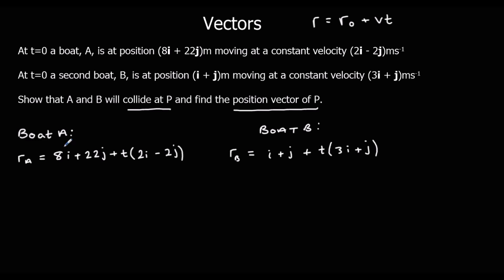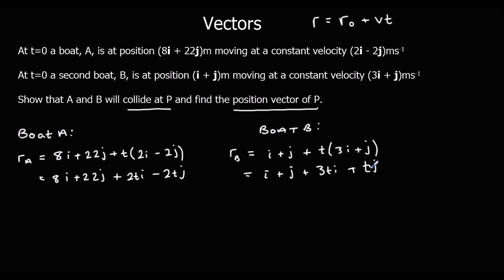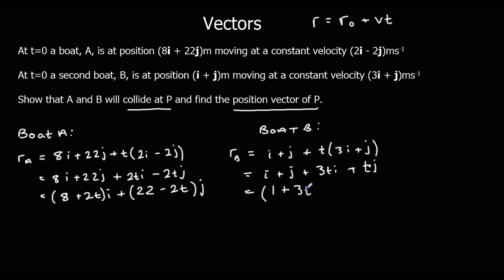We've got the position of A and the position of B. We're going to separate out the i's and j's by expanding the brackets — multiplying by t. For boat A: the i-component is 8 plus 2t, and the j-component is 22 minus 2t. For boat B: the i-component is 1 plus 3t, and the j-component is 1 plus t.